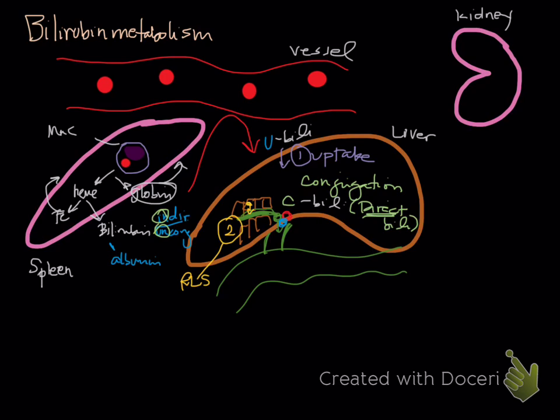Now we have bilirubin in our intestine, and it's the conjugated bilirubin. It eventually becomes something called urobilinogen, which I'm not going to test you on. Essentially that goes into your feces as stercobilinogen, and that's what makes your poop brown.